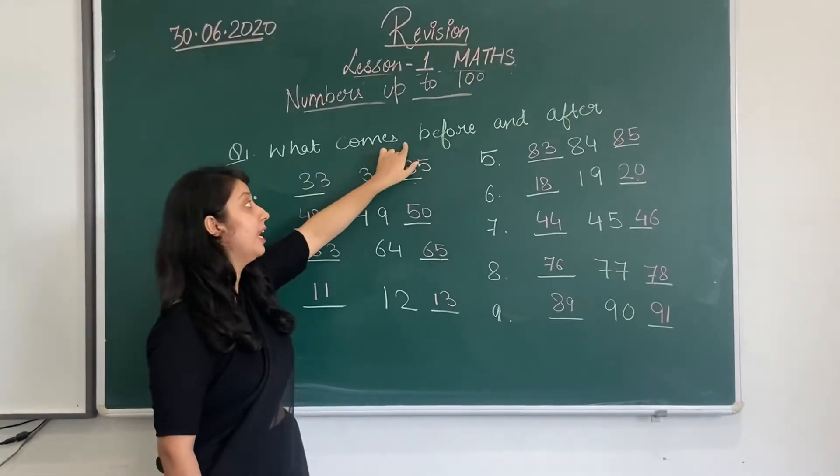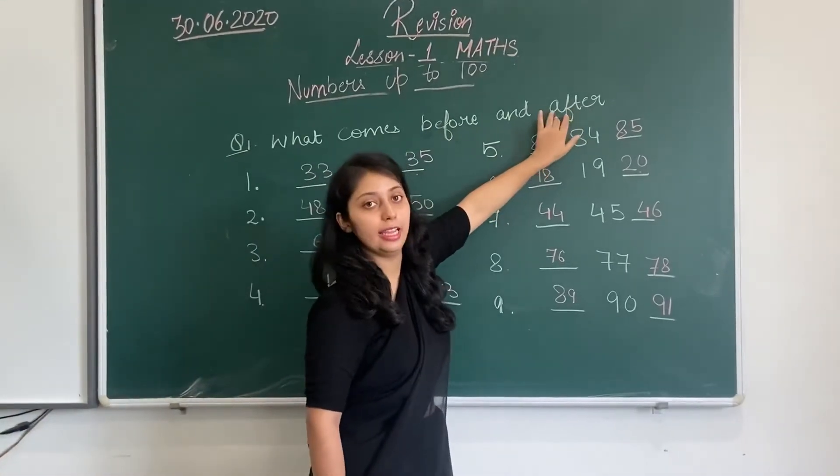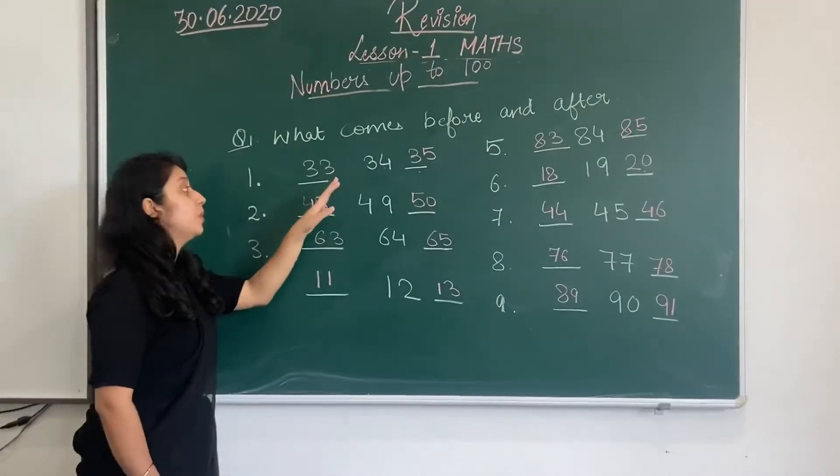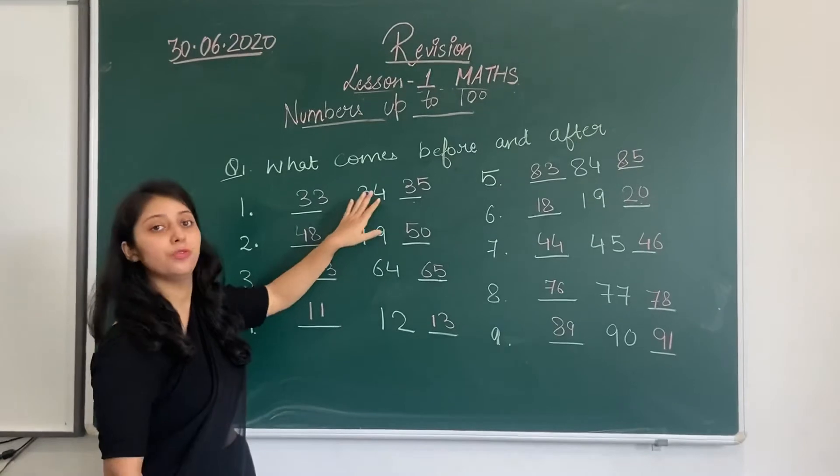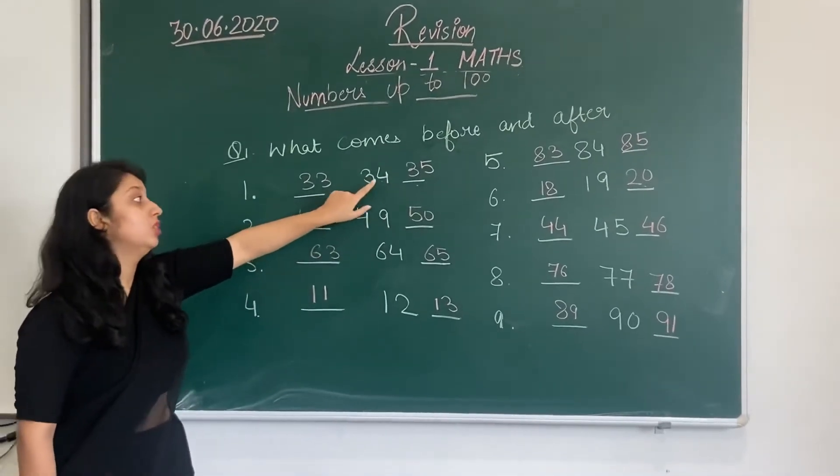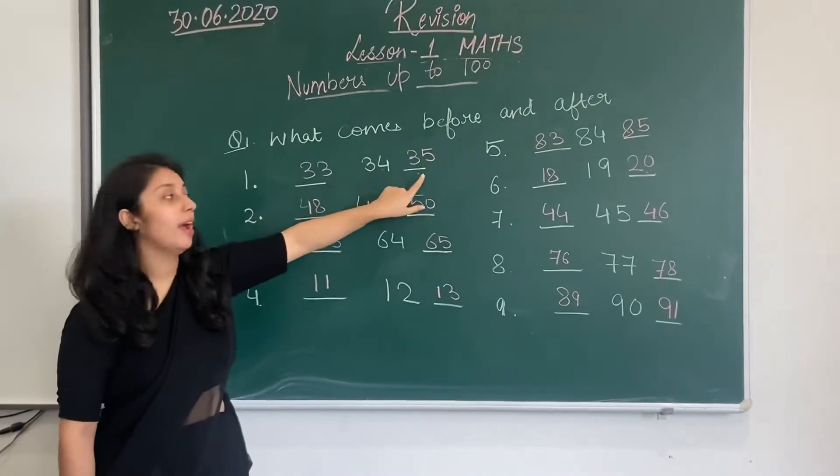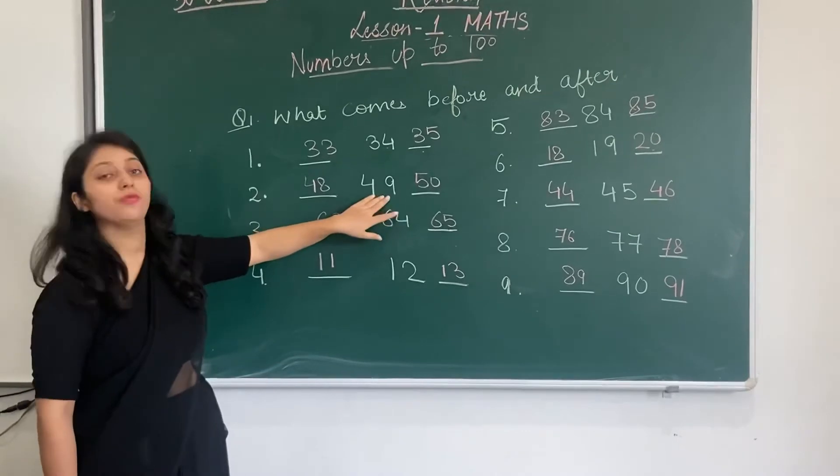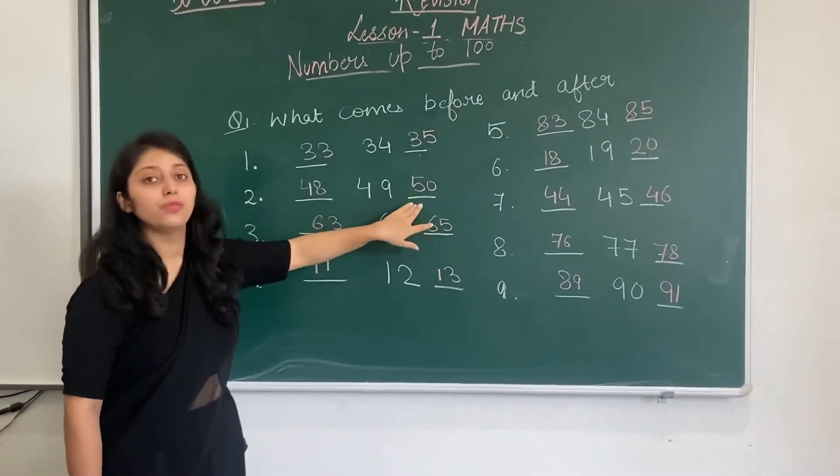So the first question is what comes before and after 34. Before 34 comes 33, and after 34 comes 35. Second question is what comes before and after 49. Before 49 comes 48, and after 49 comes 50.